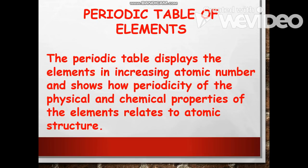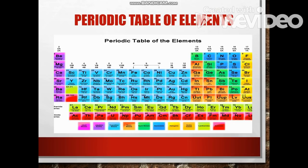The periodic table organizes elements in a particular way, so a great deal of information about an element can be gathered from its position in the table. For example, you can predict with reasonably good accuracy the physical and chemical properties of an element. Understanding the organization of the periodic table will help you obtain basic information about each of the 118 known elements.